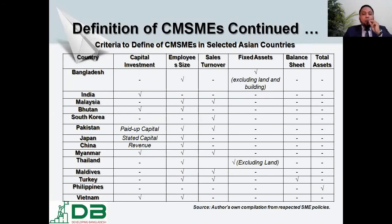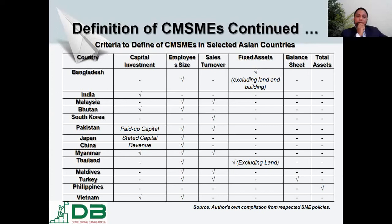How can we define Small and Medium Enterprises, or what are Micro, Small, and Medium Enterprises, based on different indicators? Bangladesh defines them based on employment size and replacement costs, excluding land and building costs. India defines them only by capital investment. Malaysia uses employment size and sales turnover. Japan uses standard capital investment and employment size. Myanmar uses three indicators: capital investment, employment size, and sales turnover. So different parts of the world define CMSME policies based on different indicators.